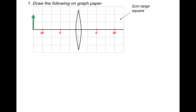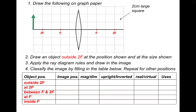There are five object positions and you could be asked to draw any of these in an examination: outside 2F, at 2F, between F and 2F, at F, and inside F. For each we can identify image position and whether it's upright, inverted, real or virtual — and there are uses for each. I'm going to go through each diagram and all the uses.